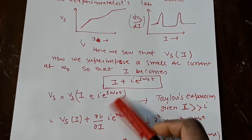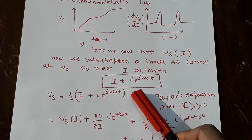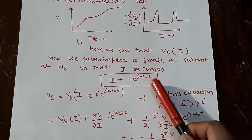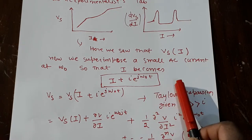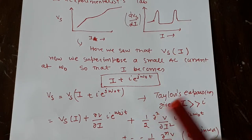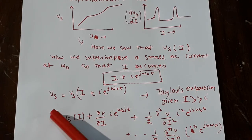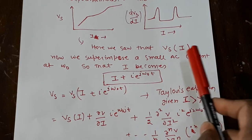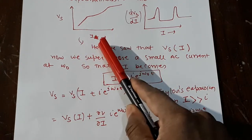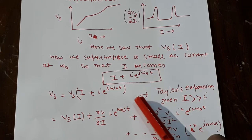So you take a bigger I. So your big I is there, whatever signal I_DC, and you superimpose a small AC signal I e^(jω₀t), which is varying at frequency ω₀, a smaller amplitude, very very small amplitude of the signal. Now, I can write, so earlier V was a function of I. Now, V is a function of I plus I small I e^(jω₀t).